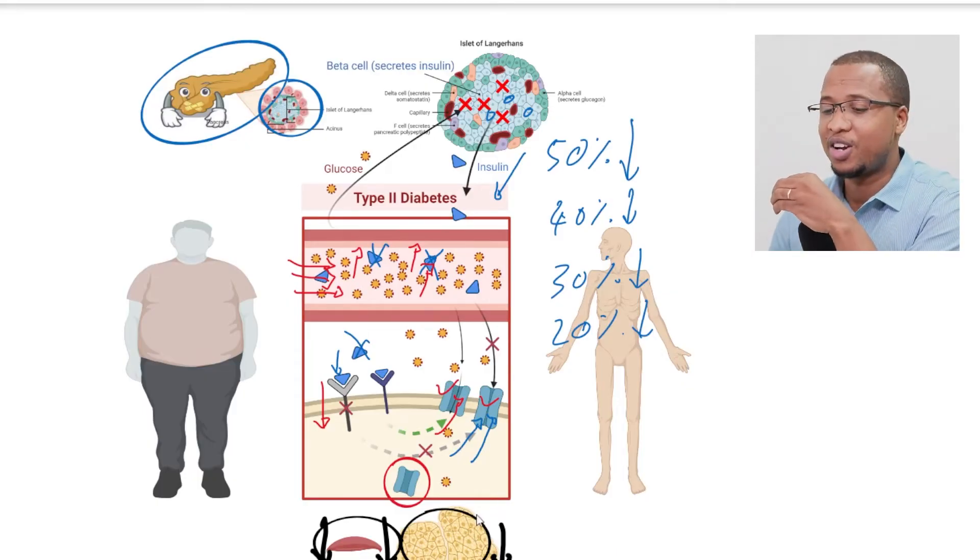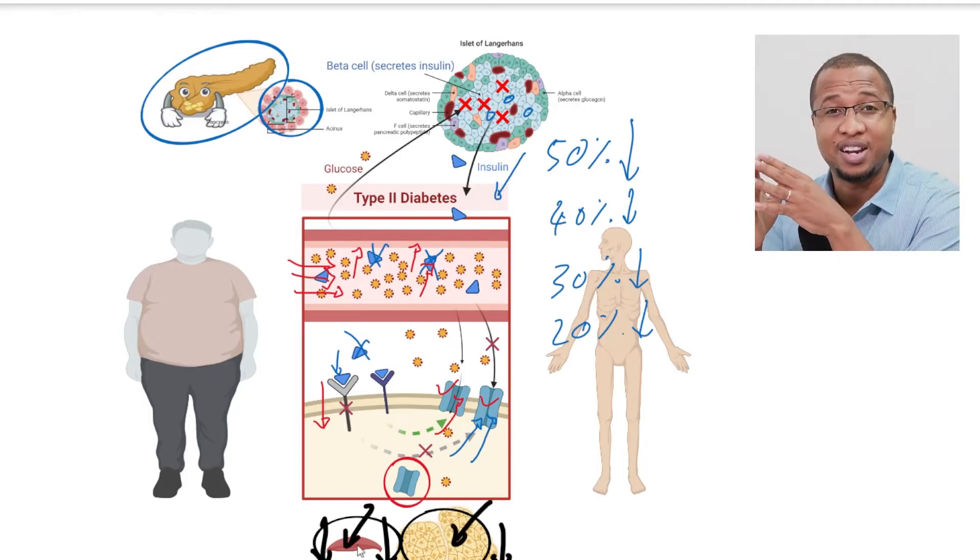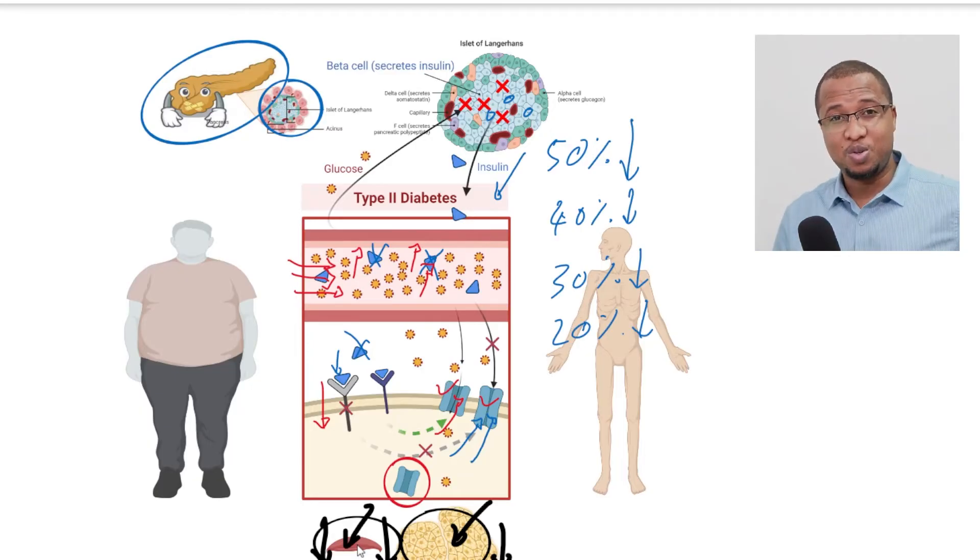Now, the third one is that when your cells are not getting enough energy, your body will start using this fat and muscle to produce energy. So your body will start using the storage of fat that you have around and your muscles to produce energy.